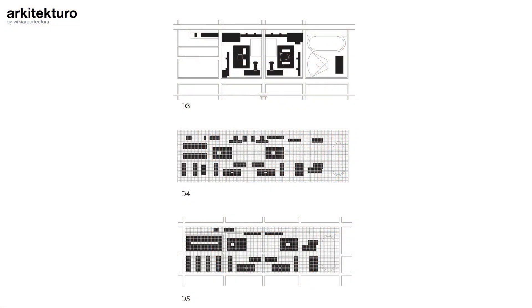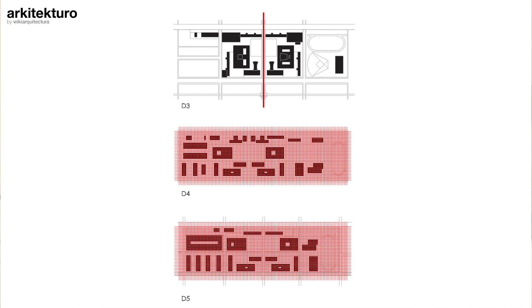In these drawings, we can see some of the evolution of Mies' master plan. At first, he didn't use the grid, and his proposal was based on pure symmetry. Then, as the project evolved, he introduced the grid. And even though symmetry still remained an important part of it, you can see how he became more comfortable breaking it at some points.